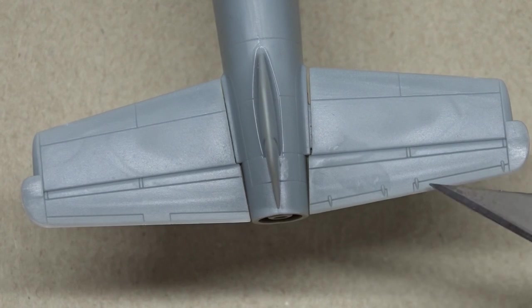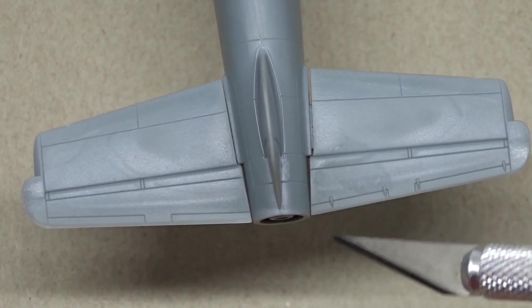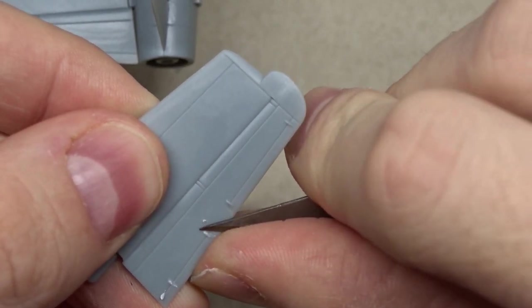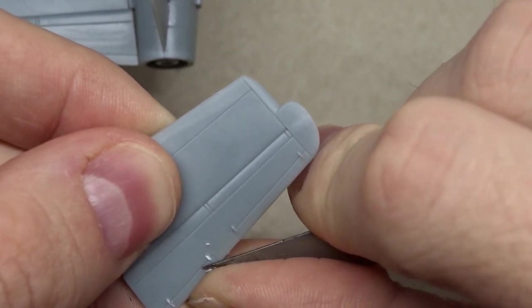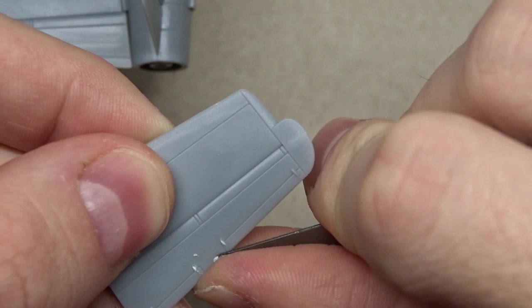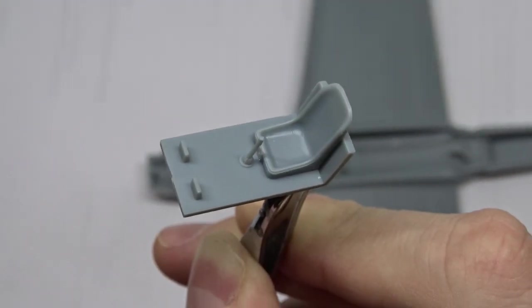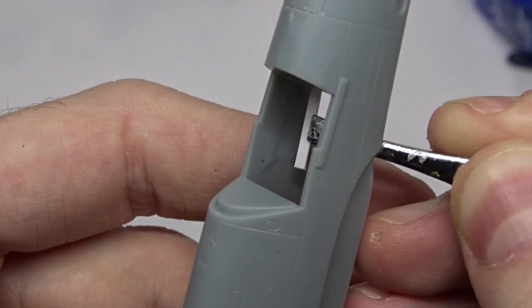The next problem were the actuators on the horizontal stabilizers that were molded on both sides on one of them. So again I had to remove them and re-scribe the panel lines. Now that the major flaws were eliminated, I was finally able to actually start building.